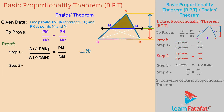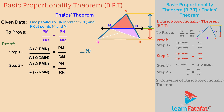Step 2: Similarly, triangle PMN and triangle RMN are also triangles with equal heights. So the ratio of their areas gives us: Area of triangle PMN divided by Area of triangle RMN is equal to PN divided by RN. This is equation 2.